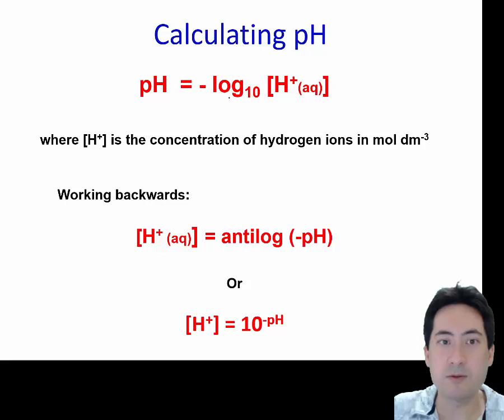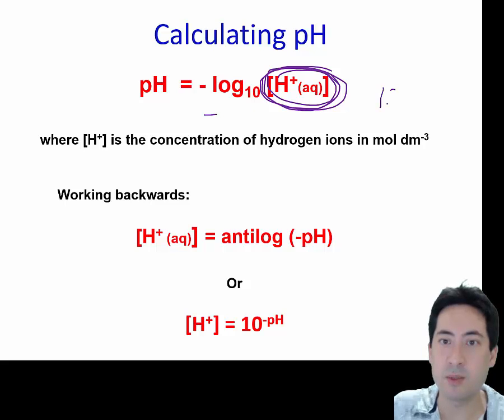So this is the mathematical formula that we use to convert this hydrogen ion concentration from a whole stack of zeros to just a simple number to deal with. Get on your calculator and take the negative log of it, the number to base 10.